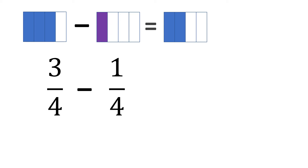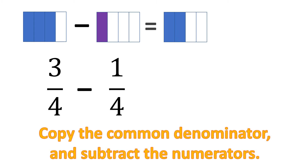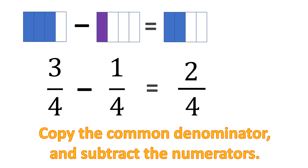So let us solve this. The rule for subtracting fractions is to copy the common denominator and subtract the numerators. So let us copy the denominator — that's 4 — and subtract the numerators. 3 minus 1, that's 2. But then this is not yet in simplified form or the lowest term.